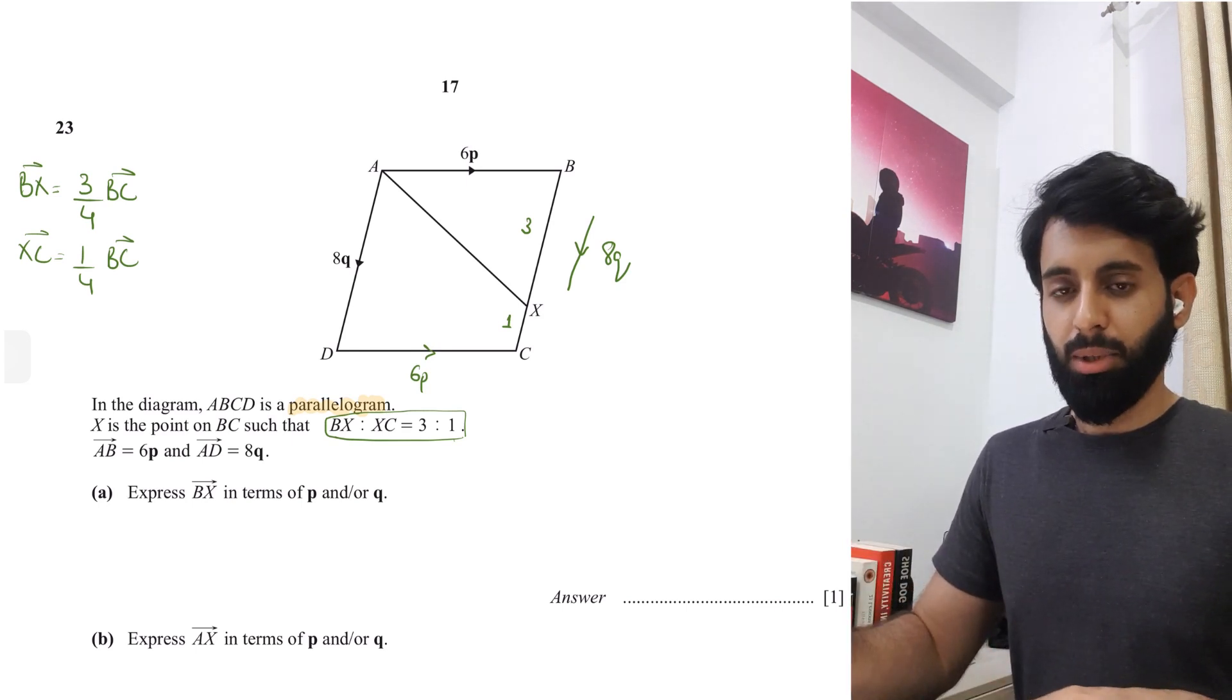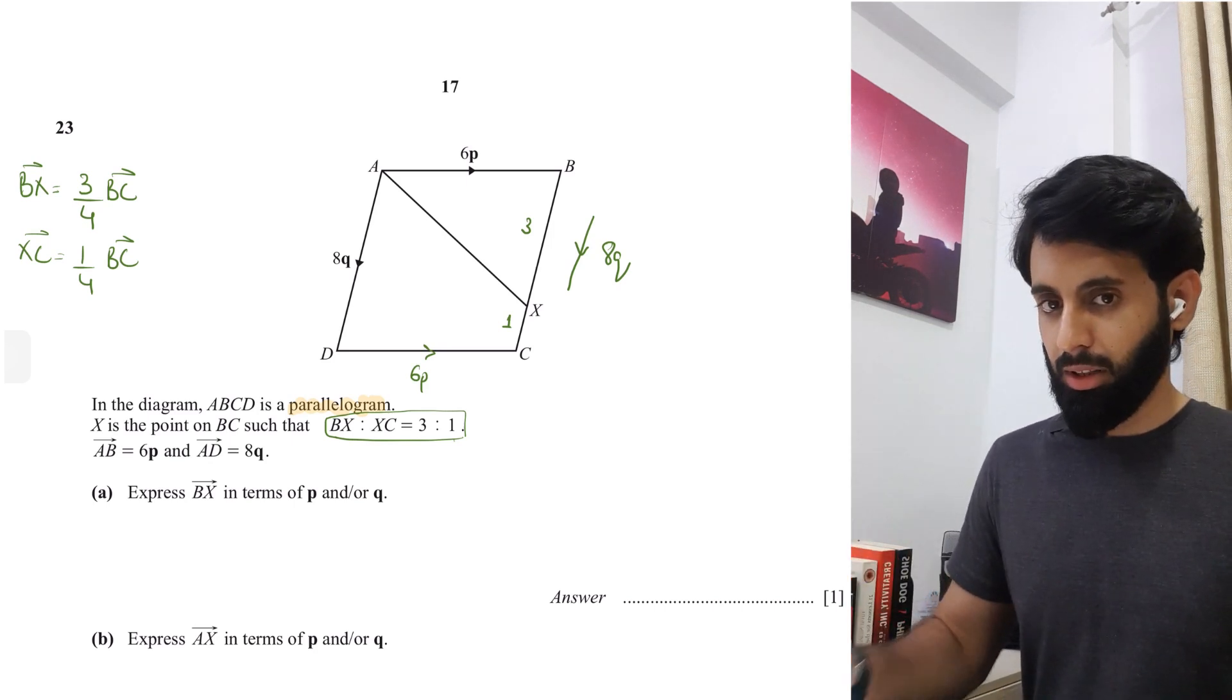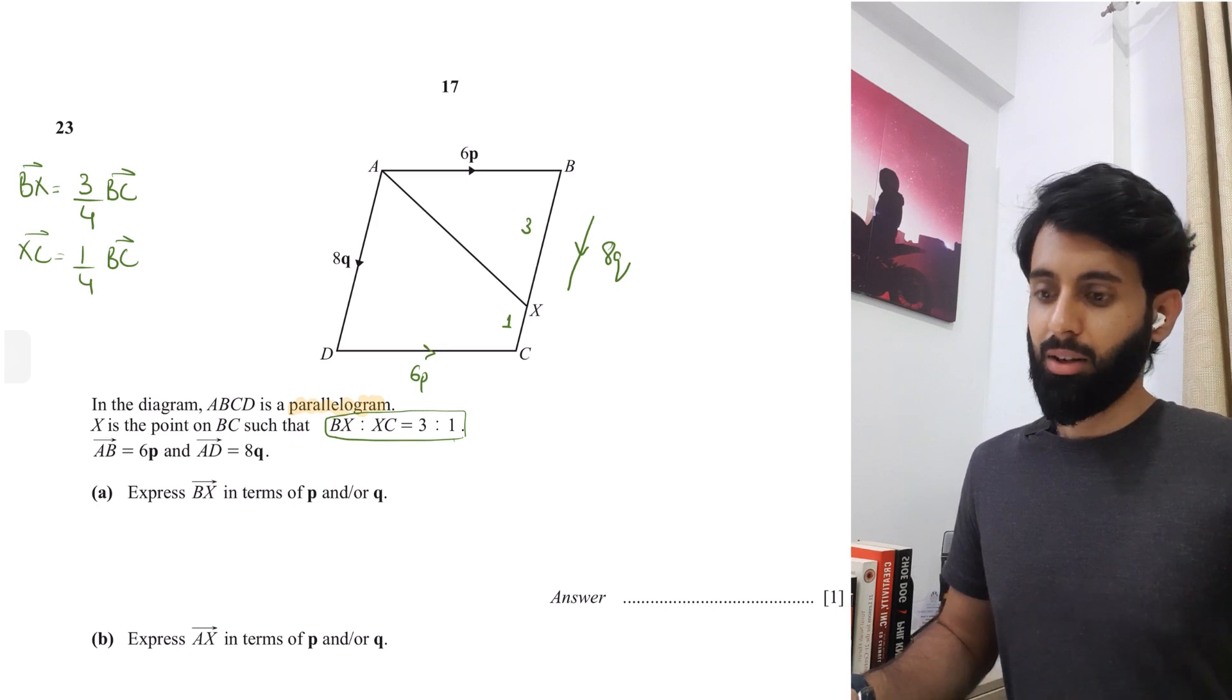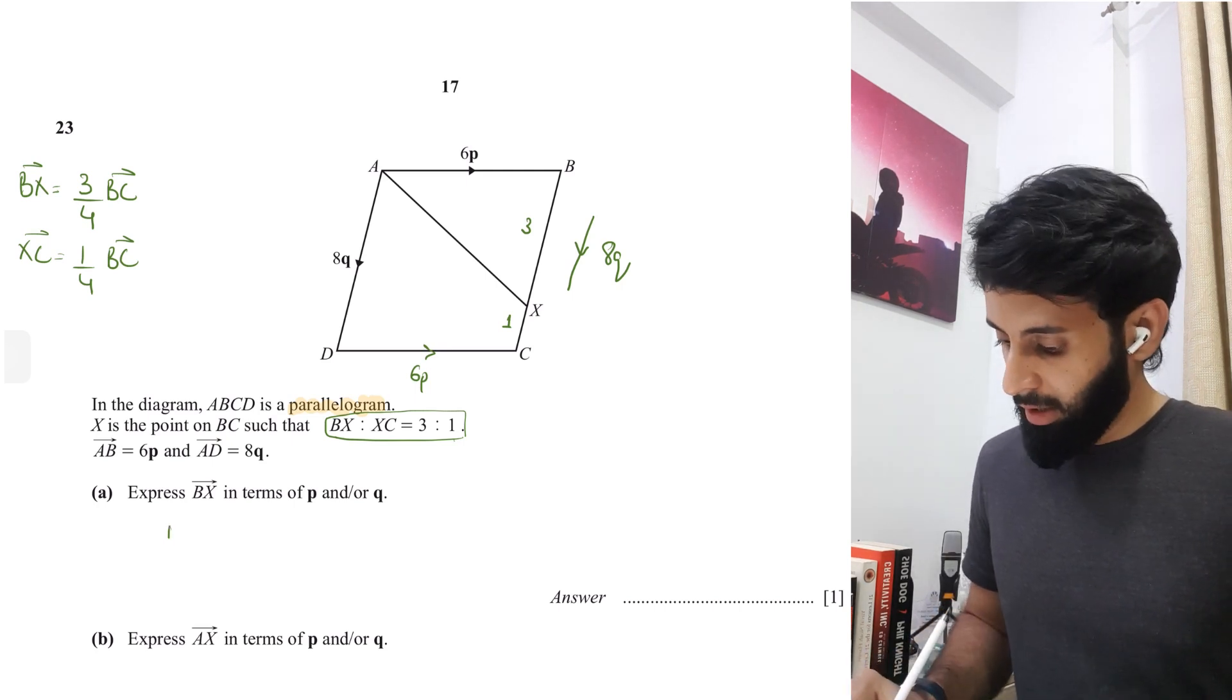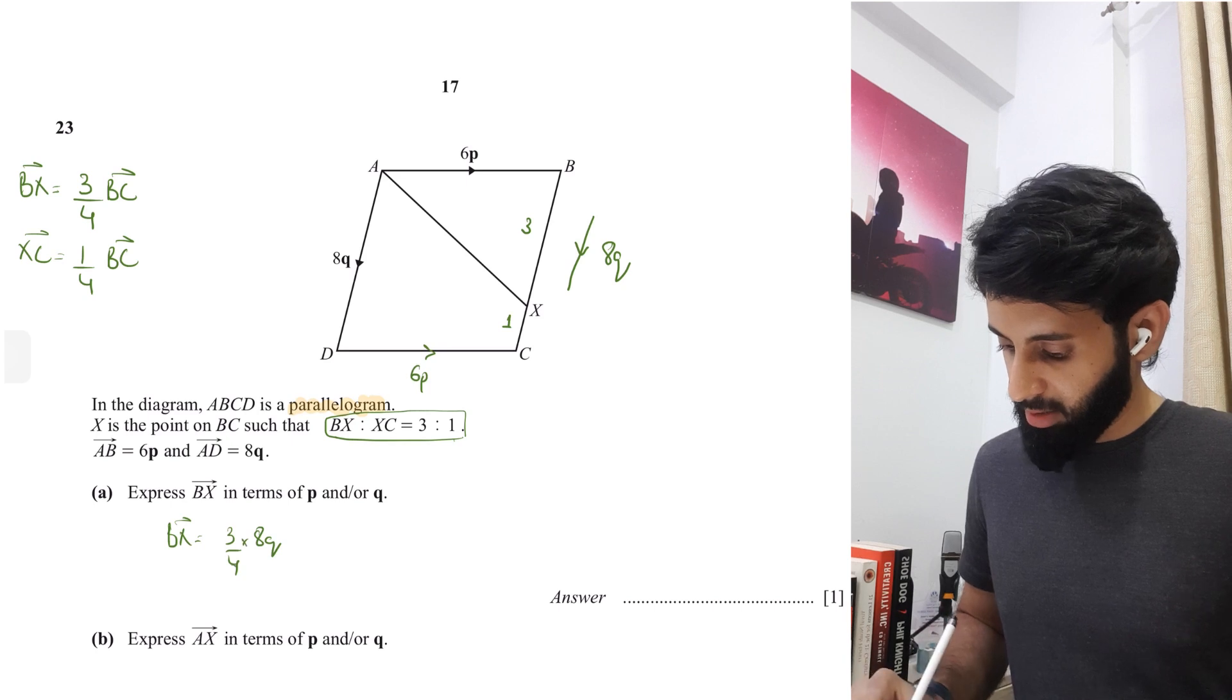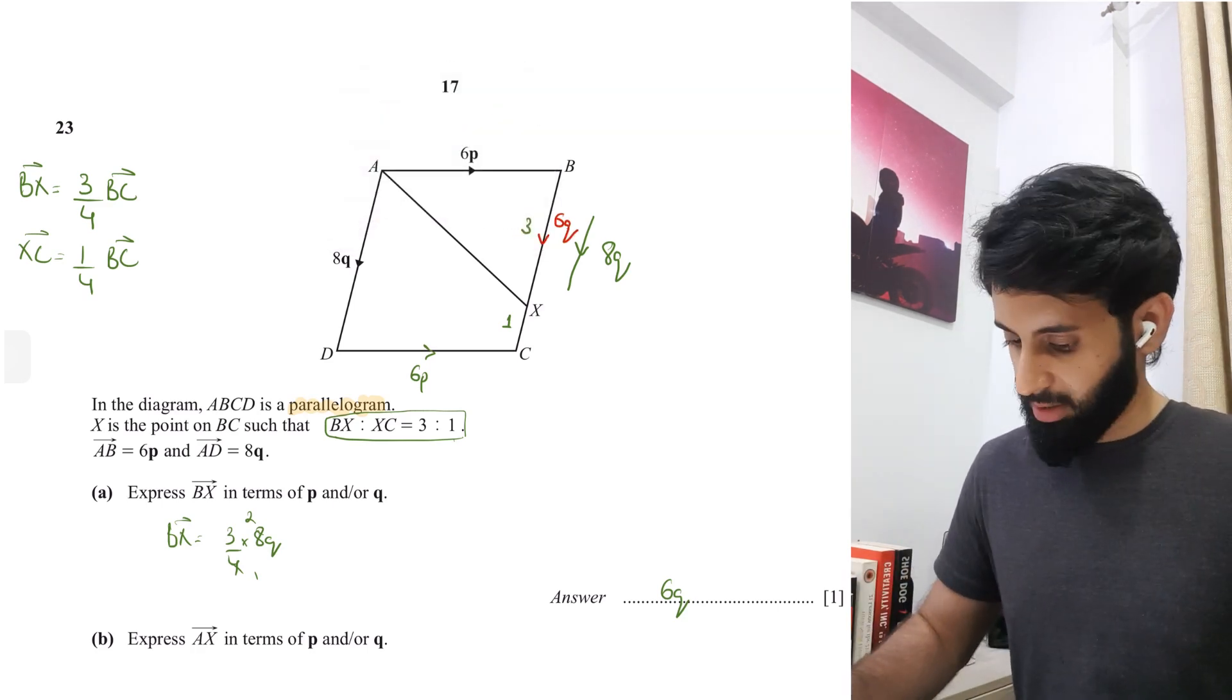BC has been broken down into 4 parts, BX takes 3 of those parts and XC takes the remaining 1 part. I've re-expressed them as a fraction of the total. In part A, the question asks us to express them in terms of P and or Q. I need to replace BC with what it is in terms of Q, which is 8Q. If you multiply 3 upon 4 times 8Q, what you end up with is 6Q. So the vector from B to X is 6Q.